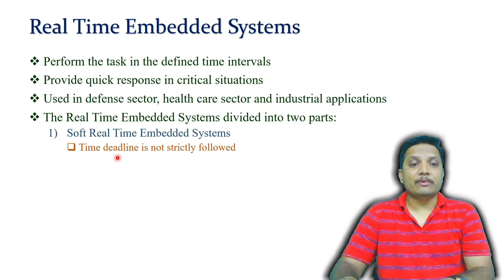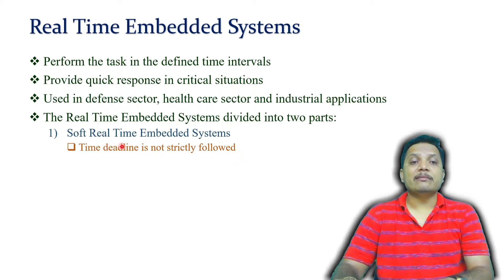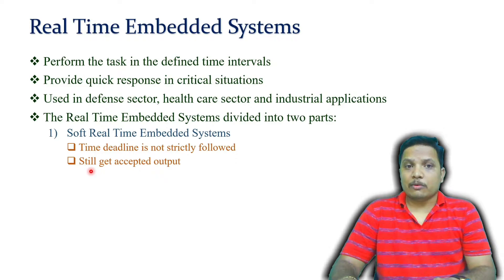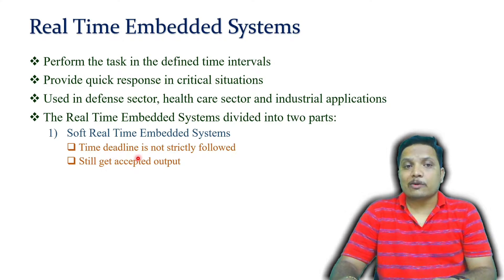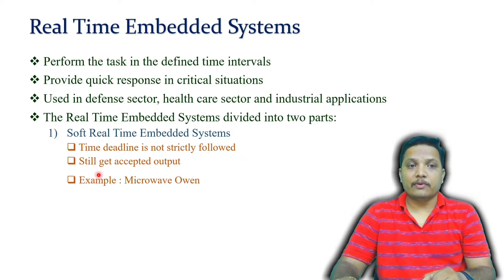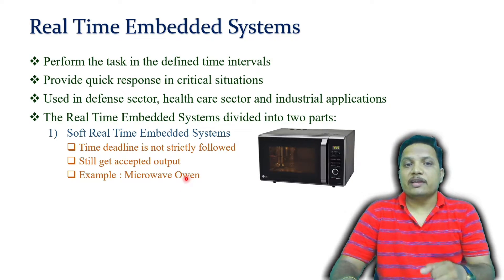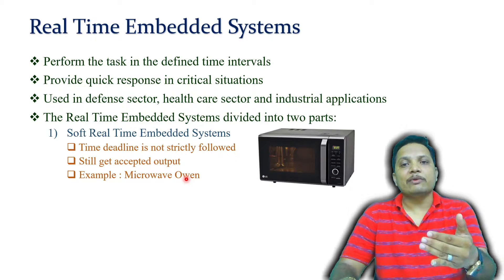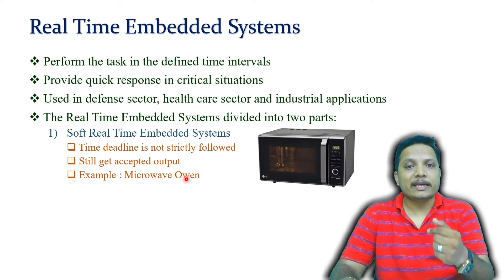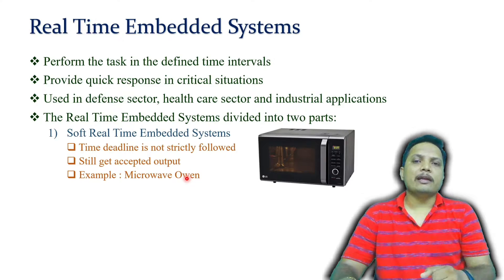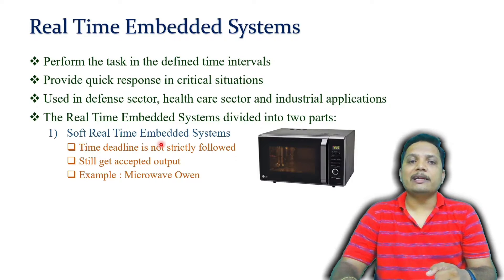In a soft real-time embedded system, the time deadline is not strictly followed. Even if time deadlines are not strictly met, the output can be accepted. For example, in a microwave oven, it is not strictly required to follow five minutes and two seconds exactly — a few seconds plus or minus while executing a particular event is acceptable. That is the case of a soft real-time embedded system.